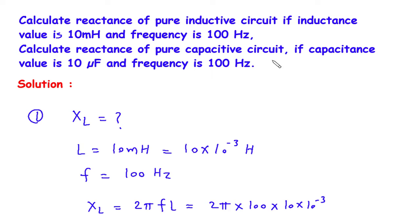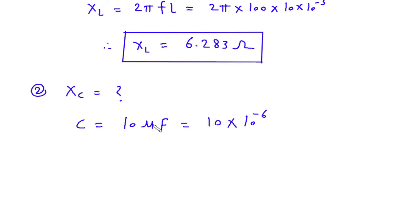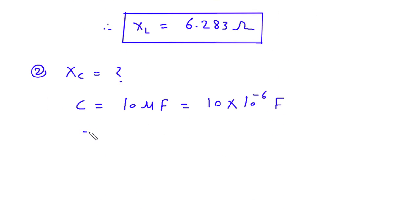The value of capacitance is given: C is equal to 10 microfarad. We can convert this microfarad to farad, so this will be 10 multiplied by 10 to the power minus 6, because here it is micro, so we multiply by 10 to the power minus 6, and this will be farad. Then frequency F is equal to 100 Hz.